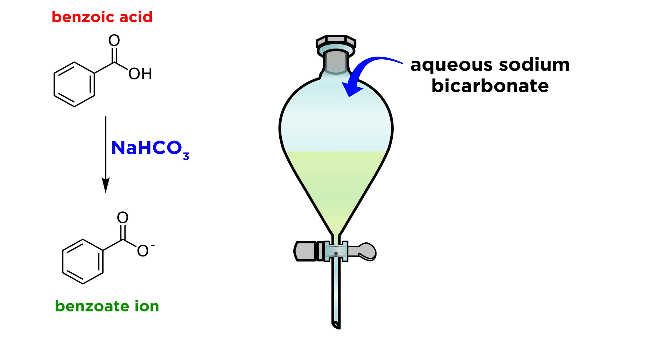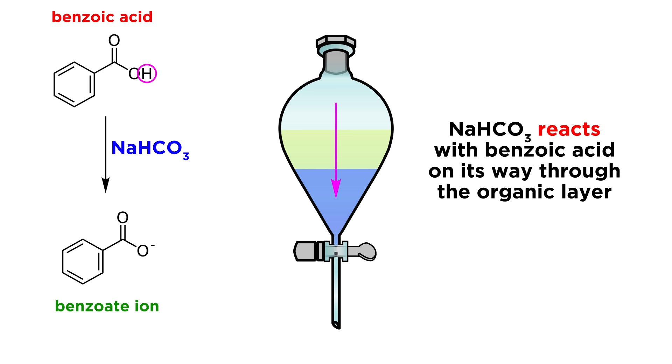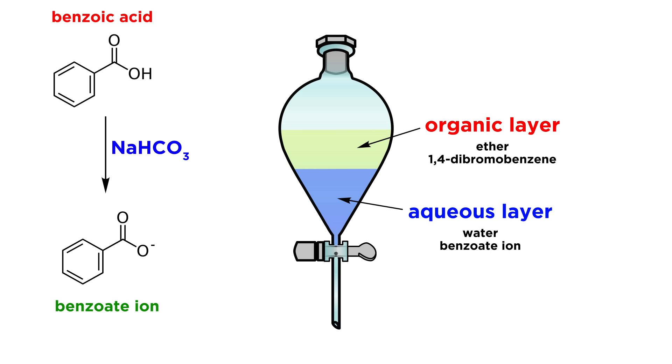So we can add some aqueous sodium bicarbonate, which will pass through the organic layer to form an aqueous layer at the bottom, but as it goes it will accept a proton from benzoic acid. This leaves the benzoate ion, which will be very water-soluble, since the negative charge can interact with water molecules in solution. So just like the previous step, the base drags benzoic acid into the aqueous layer.